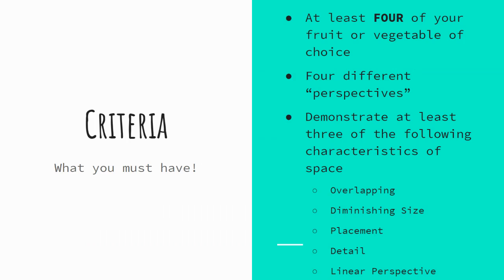Now that you've made it almost all the way to the end, write down that criteria. In your final, you are required to include at least four of your chosen fruit or vegetable. You must include four of the different perspectives — we went over five together: side view, tilted forward, tilted away, top, and bottom. You must also demonstrate at least three of the following characteristics of space: overlapping, diminishing size, placement, detail, and linear perspective. Pick your three. That wraps it up.